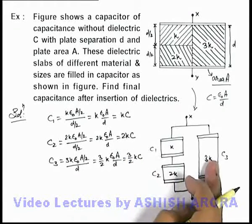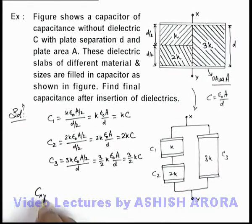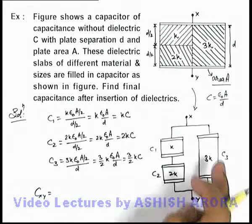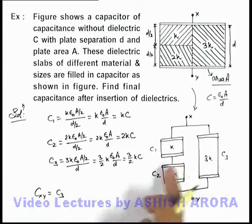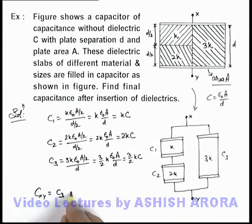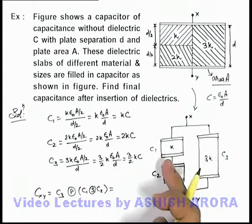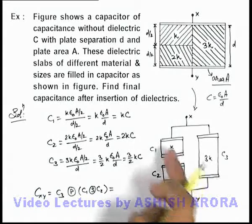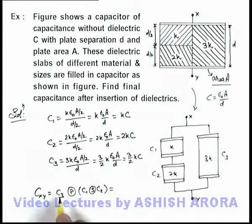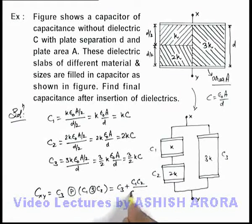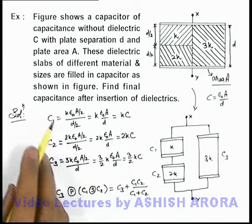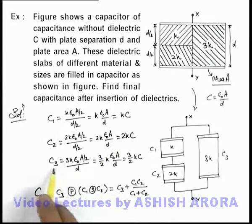Now with these capacitances, the equivalent capacitance across the combination XY can be written as C3 in parallel combination with C1 and C2 in series. For a parallel combination, capacitances are added up, and in series the reciprocals are added up. So the equivalent capacitance is C3 plus (C1·C2)/(C1 + C2). Substituting the values of C1, C2, and C3: